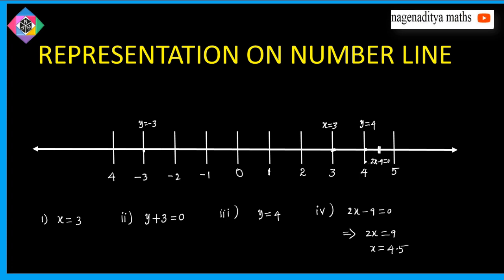The fifth problem is 3x plus 5 is equal to 0. This implies 3x is equal to minus 5, so x is equal to minus 5 by 3, which is approximately minus 1.6 repeating.